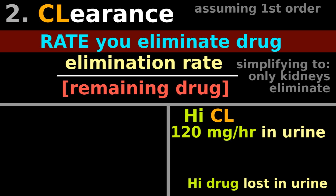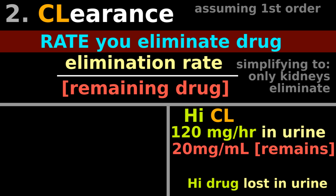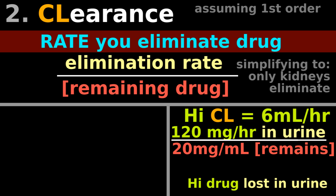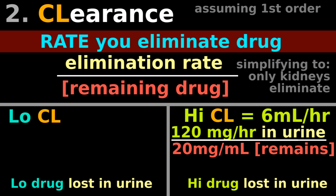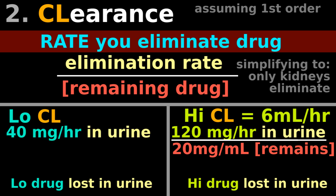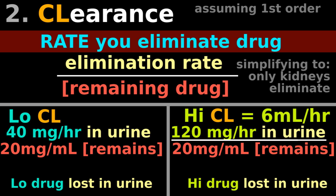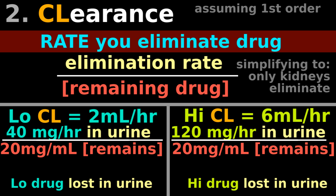If you pee out 120 mg per hour and there is 20 mg per ml remaining in your plasma, then your clearance is 6 ml per hour. Low clearance means there is less drug in urine and more drug kept in your body. You pee out 40 mg per hour and there is still 20 mg per ml remaining in your plasma, thus your clearance is 2 ml per hour.